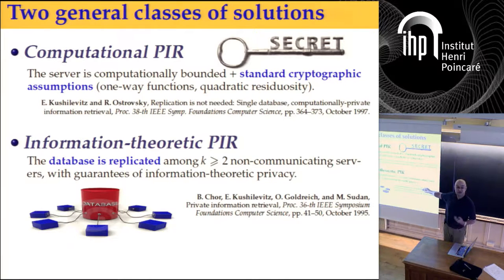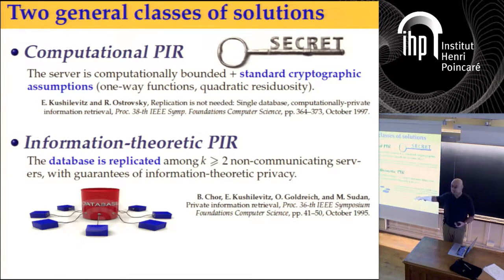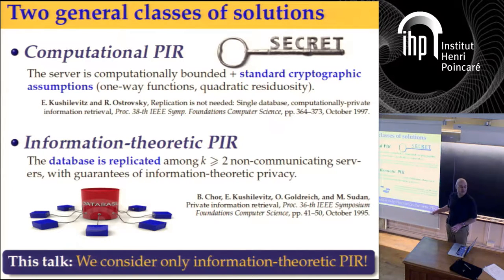In information-theoretic PIR, we achieve it by replicating the database among several non-communicating servers. And by that result I showed earlier, we need at least two non-communicating servers in order to make information-theoretic PIR possible. In this talk, it will be entirely about information-theoretic private information retrieval.